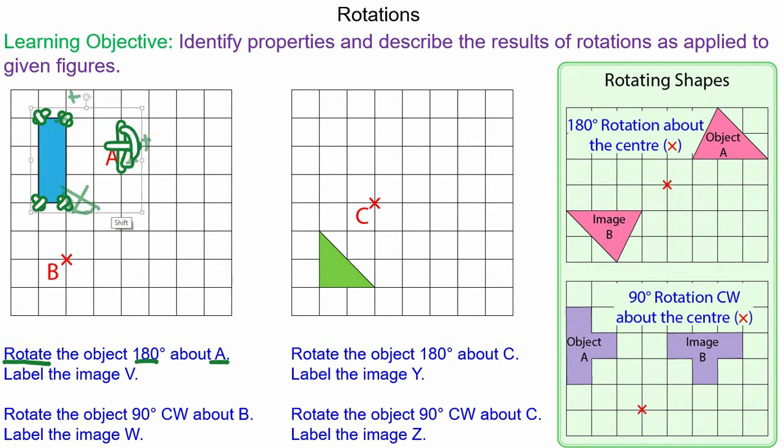Now for a 180 degree rotation it could be clockwise or anti-clockwise. We redraw the object to create the green image and we're going to label the image V.